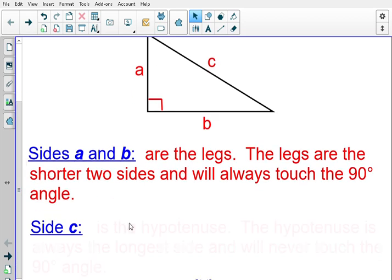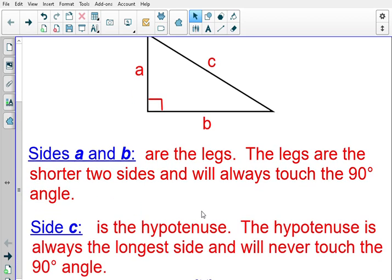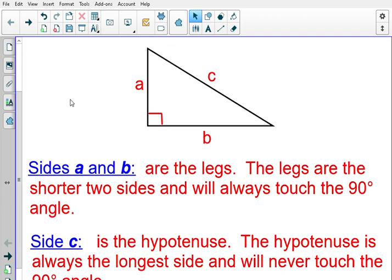Side C is the hypotenuse. The hypotenuse is always the longest side and it will never touch the 90 degree angle. Side C starts here and goes to here. The 90 degree angle is over here. It's A and B that touch it.